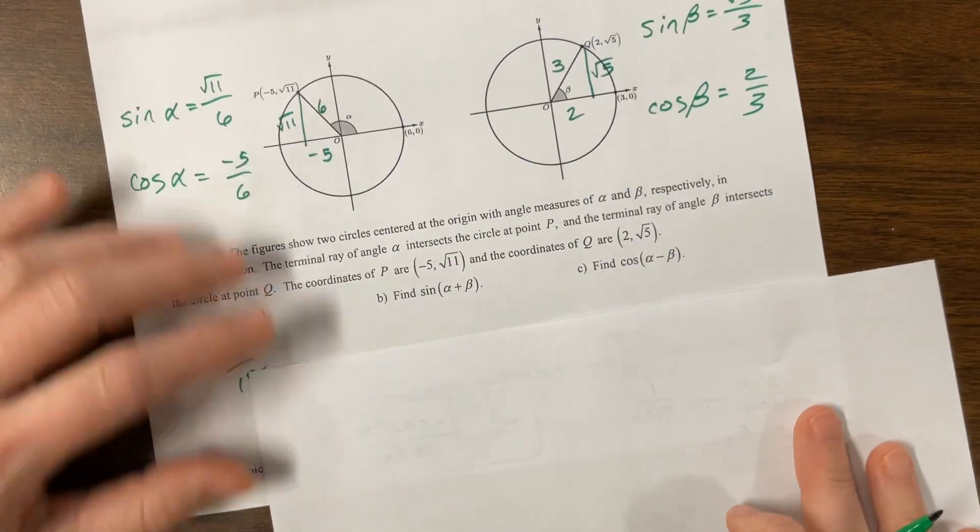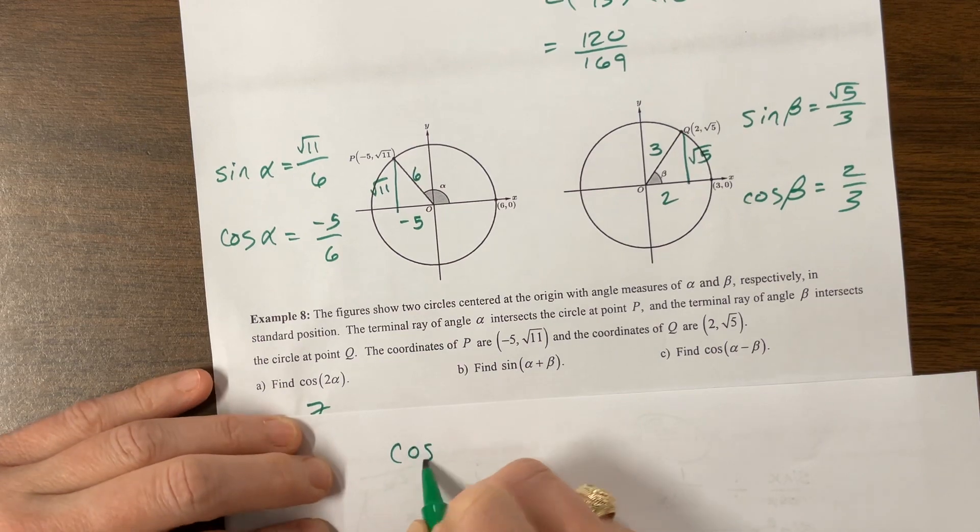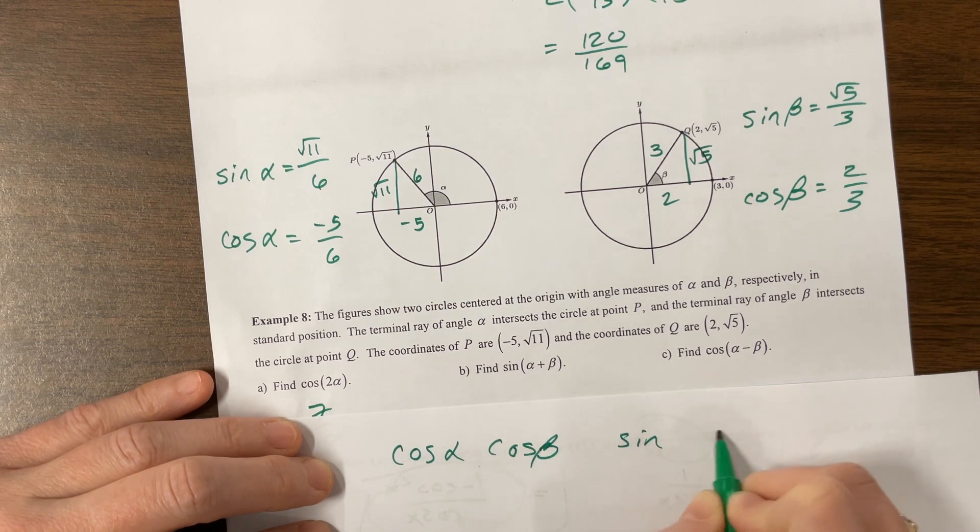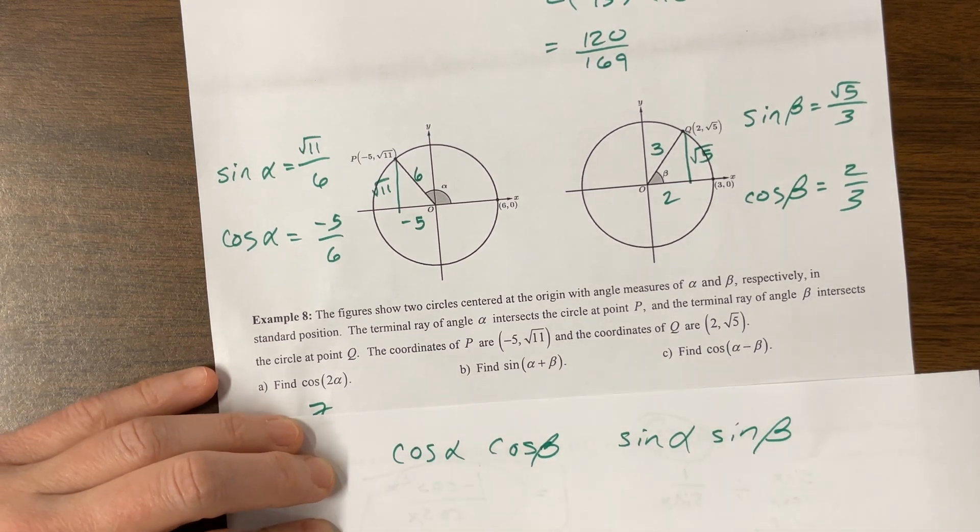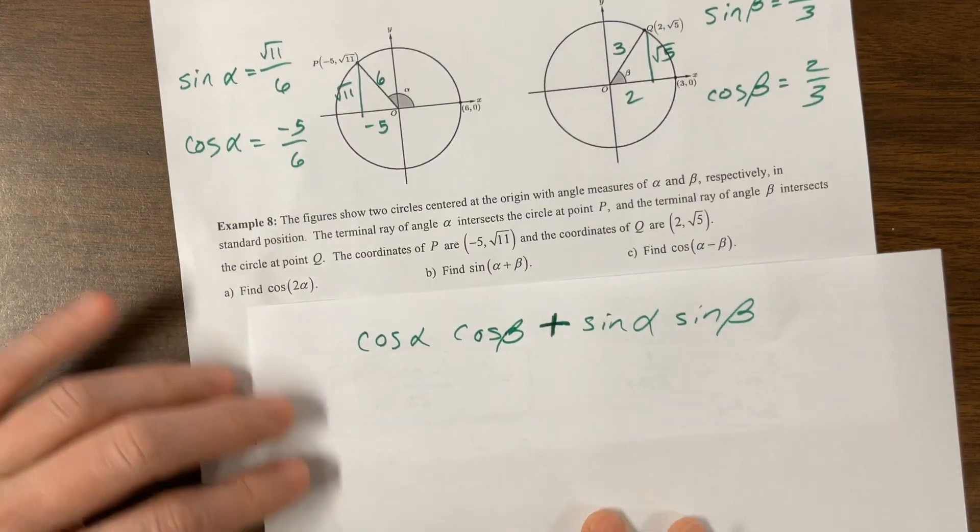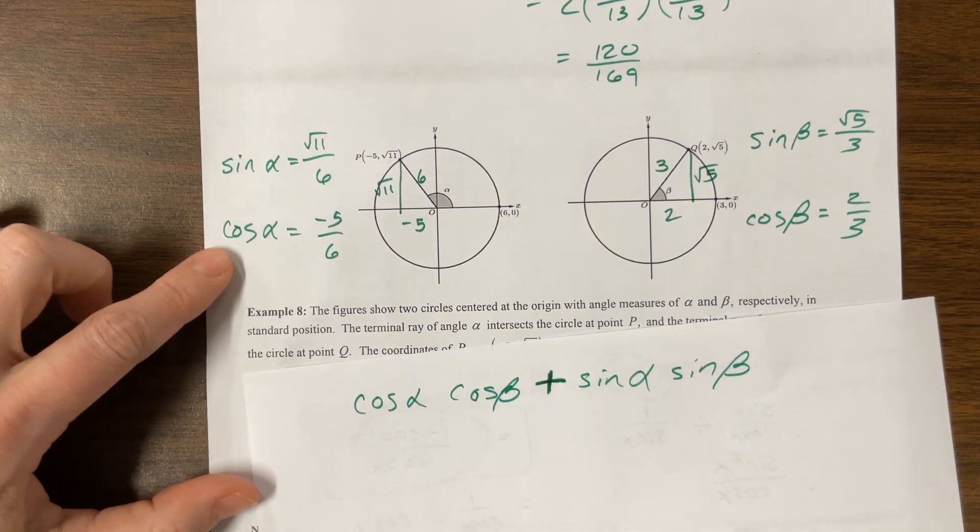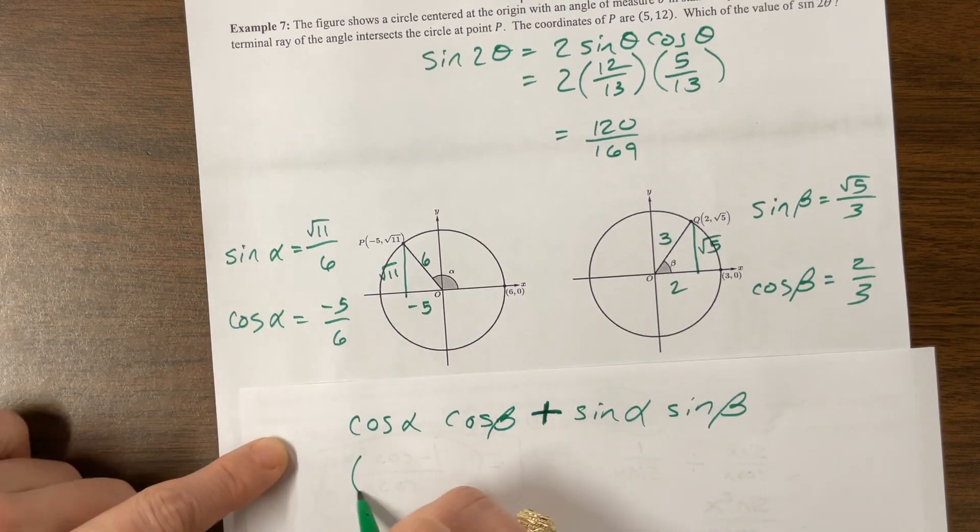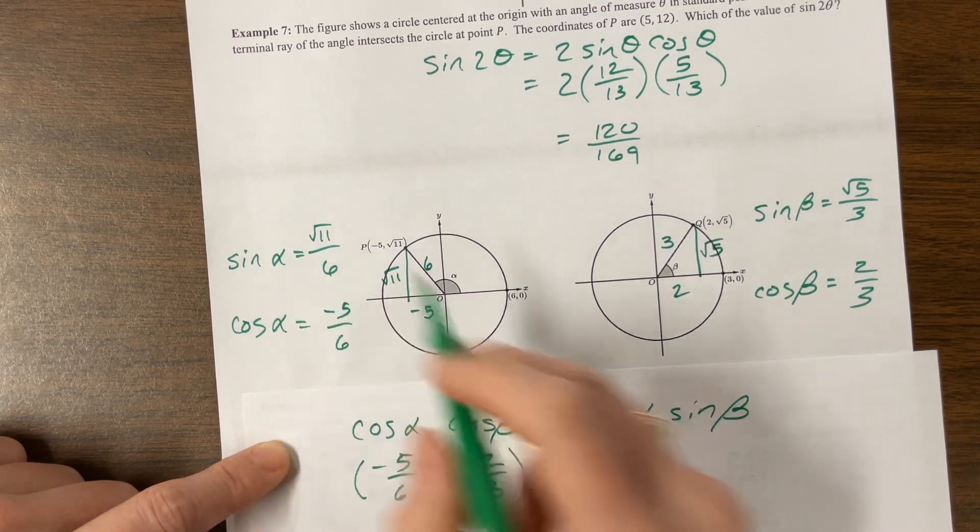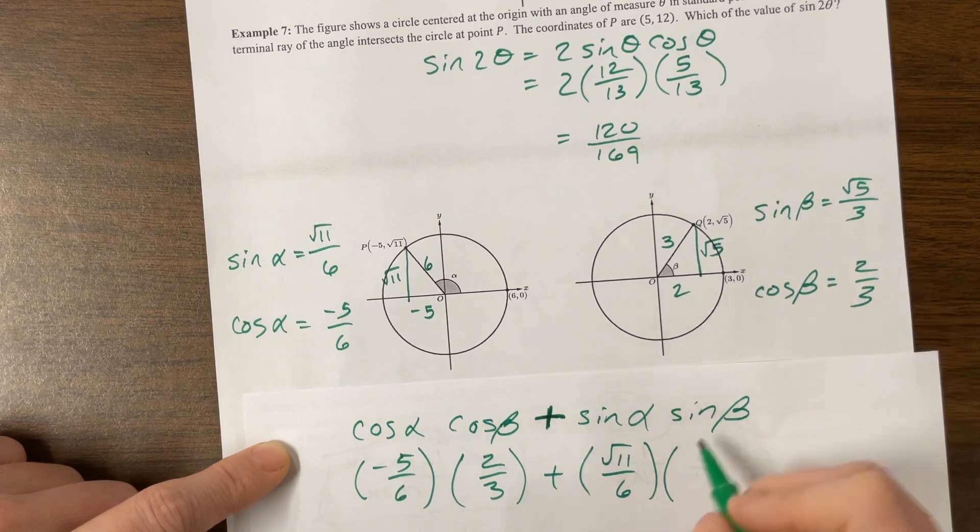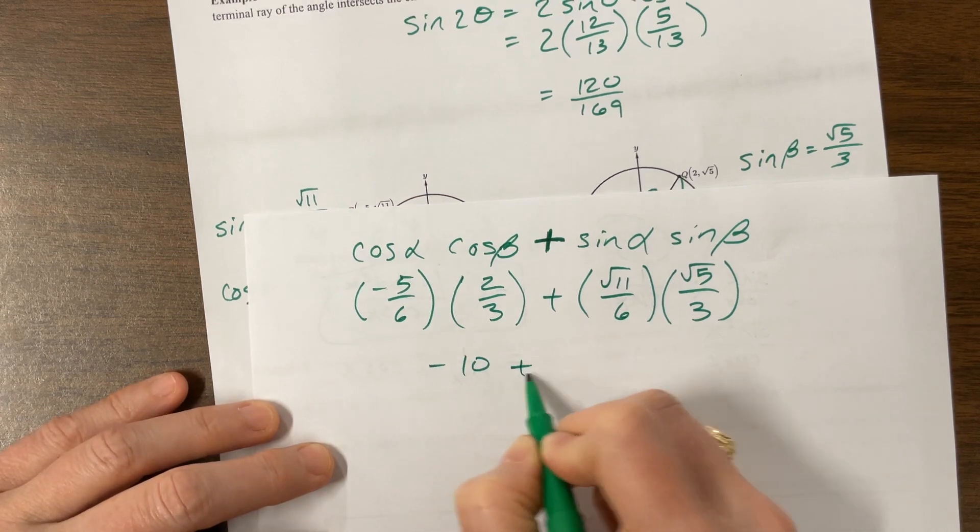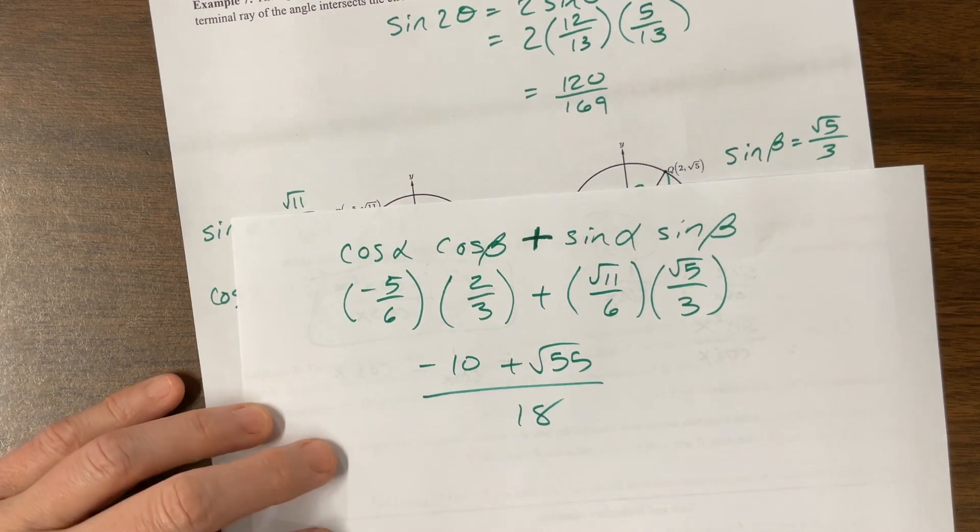Okay. So then now we need to do cosine of alpha minus beta. So the cosine one is cosine, cosine, oh, so beta, sorry, sine, sine, alpha, beta, excuse me, with the opposite SIGN. So if it was a minus here, we want a plus here, we want a plus here. And then, okay, looking back at my everything that I set up before, this is negative 5 over 6. That's a 5 pretend. Okay. Cosine of beta is 2 thirds. Sine of alpha is root 11 over 6. Sine of beta is root 5 over 3. Okay. Negative 10 plus root 55 all over 18. Makes me happy.